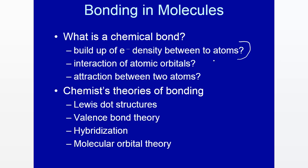In fact, that's how X-ray diffraction works. X-rays are diffracted by electrons, and the electrons are concentrated around the nucleus, so X-ray diffraction gives you where the nuclei are.